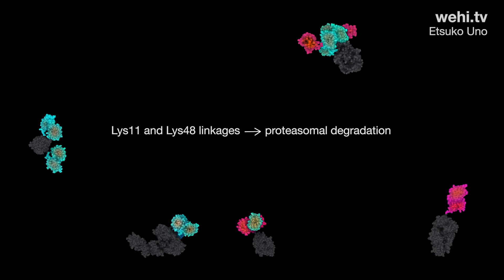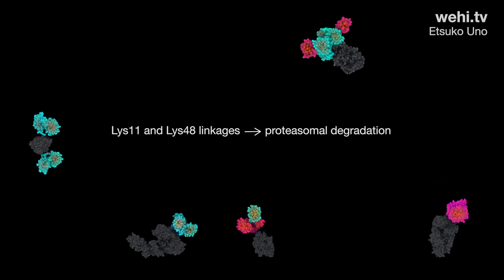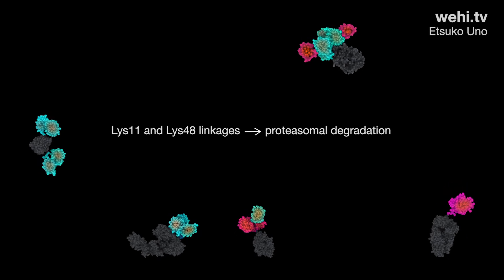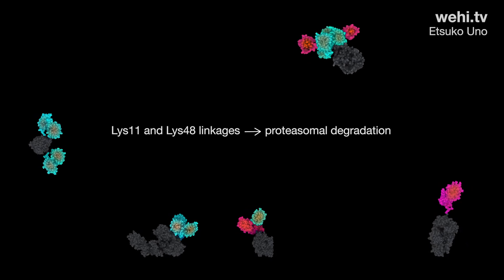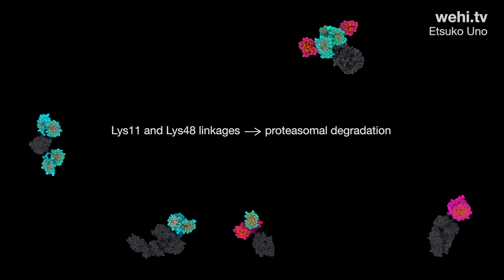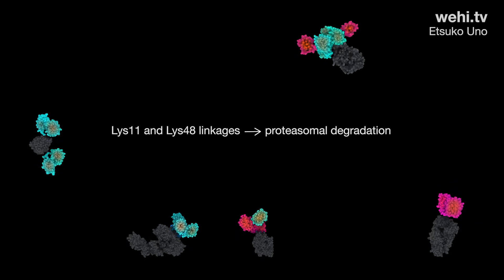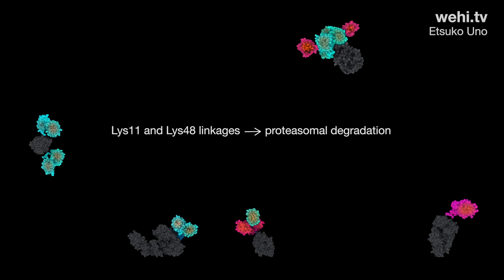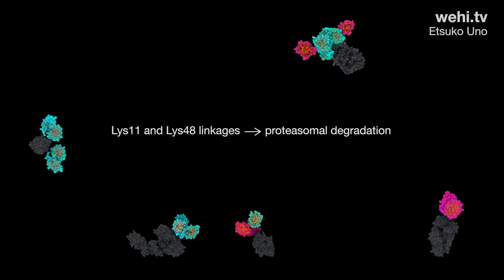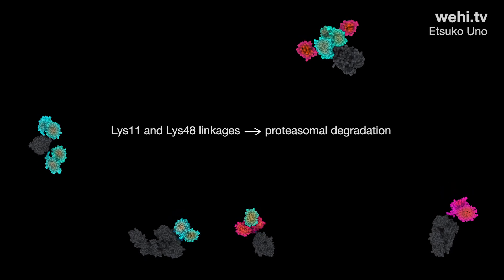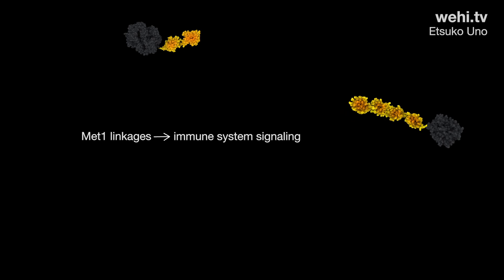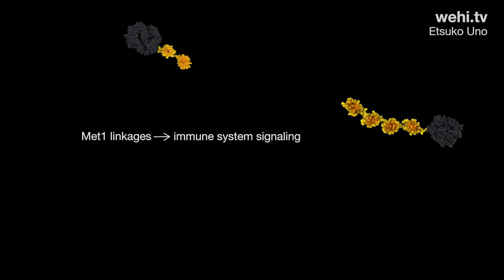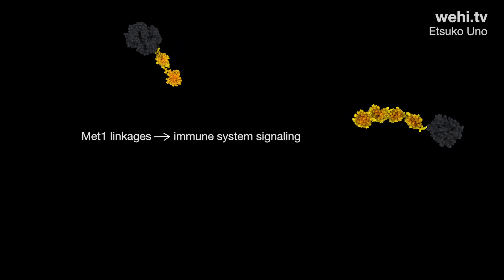Lysine 11 and lysine 48 linkages, when attached to a protein, signal that this protein is to be removed by proteasomal degradation. Other proteins recognise these specific ubiquitin tags and direct the proteins to the proteasome for destruction.